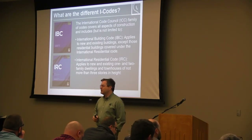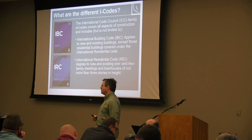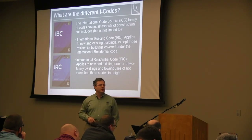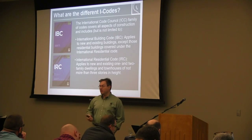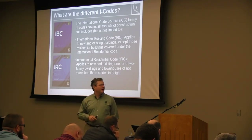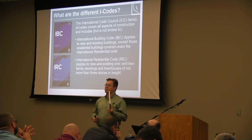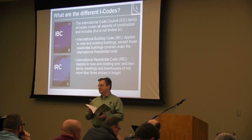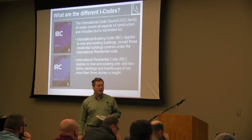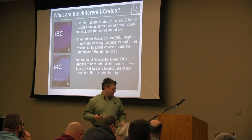The International Energy Conservation Code is one of several codes put out by the International Code Council, collectively referred to as the I-codes. These include the International Building Code, International Residential Code, fuel gas code, and others. These are model codes — they are not enforceable by themselves until a locality, municipality, jurisdiction, or state adopts them. It's common for adoption to come with some amendments; the state of Illinois has a few amendments to the code.